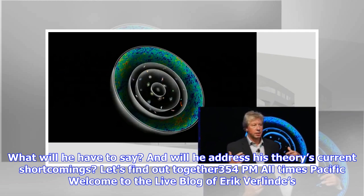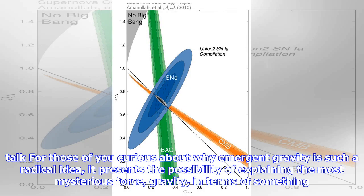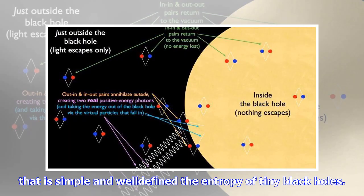Eric Verlinde is delivering the Perimeter Institute public lecture at 7 PM Eastern, 4 PM Pacific Time tonight, and you can watch it right here and catch a live blog of his talk below, either in real time or at any point thereafter. What will he have to say and will he address his theory's current shortcomings? Let's find out together.